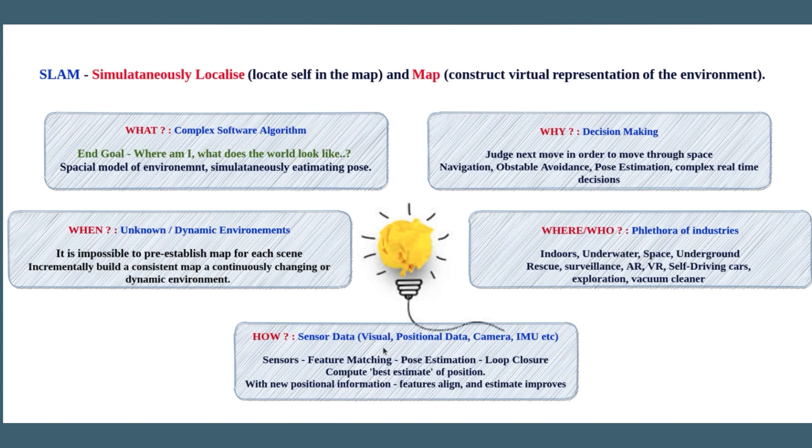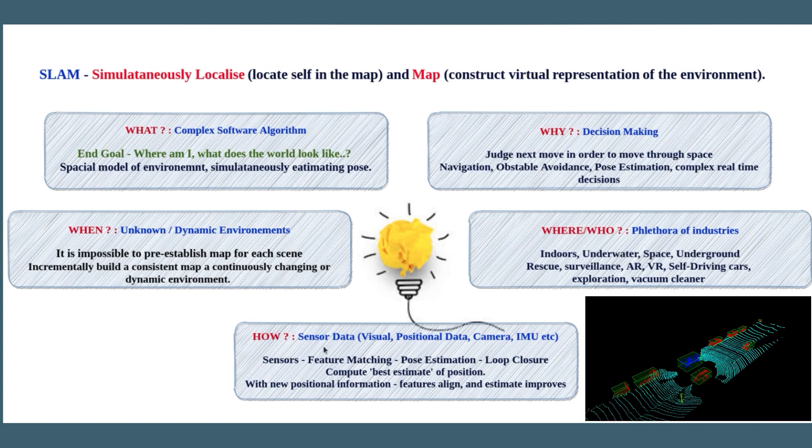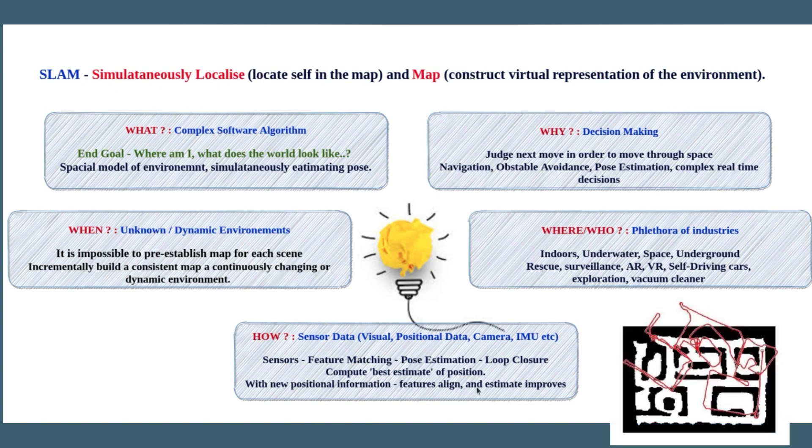And one of the most important questions is how do we achieve SLAM? The very first step in SLAM is to gather appropriate information using the right sensors for the right application. We then use several techniques such as Kalman filter to fuse the data together, after which it is a multi-step process where we perform feature matching, pose estimation and loop closure. And it's important to note that as we get new positional information, we match or align the known features and continuously improve the pose estimate.